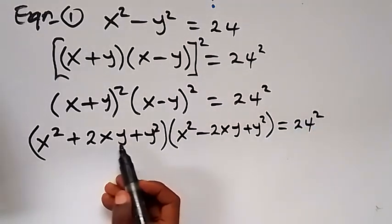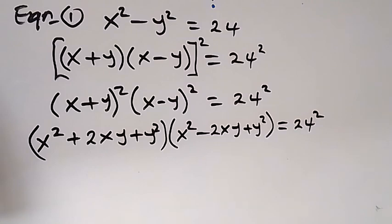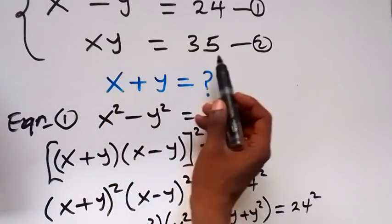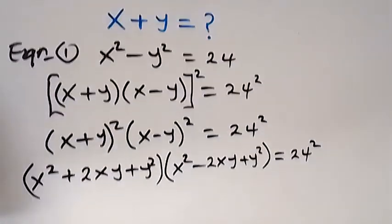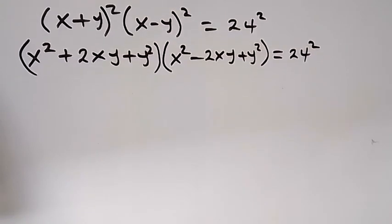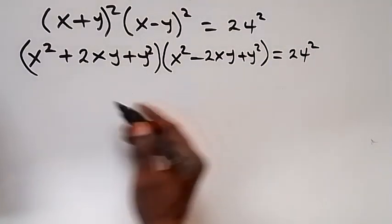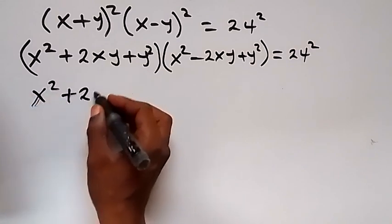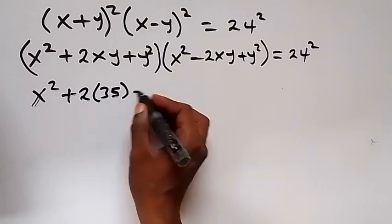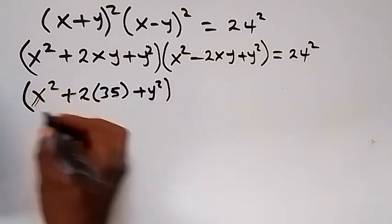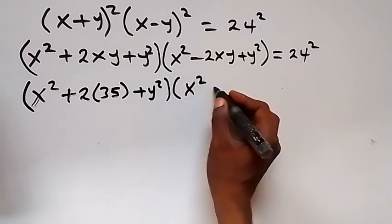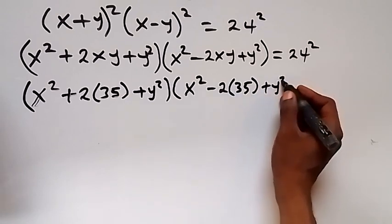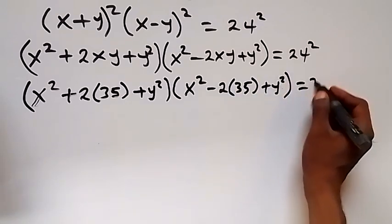From equation 2, we have xy equals to 35, so we can replace xy with 35. Instead of having xy, we write 35. This becomes x squared plus 2 multiplied by 35, plus y squared, times x squared minus 2 multiplied by 35, plus y squared, equals to 24 squared.